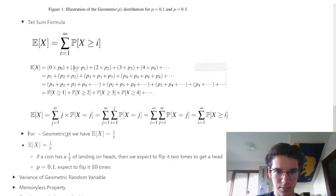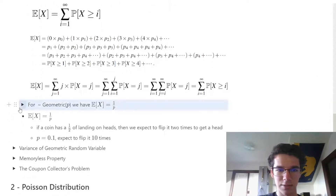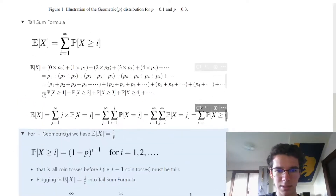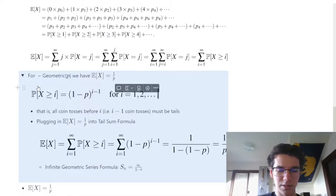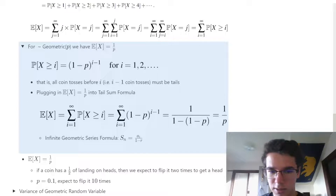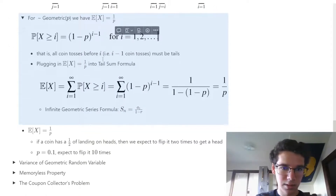A lot of this note emphasizes mathematical proofs of how this works, but it doesn't leave a great understanding of how to apply these. There were only one or two examples per distribution, so I didn't get a solid sense of how to use these from this note.